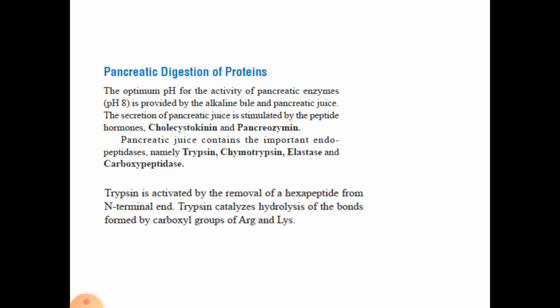In pancreatic digestion, the optimum pH for pancreatic enzymes is around 8, provided by alkaline bile and pancreatic juice. Secretion of pancreatic juice is stimulated by the peptide hormones cholecystokinin and pancreozymin. Pancreatic juice contains important endopeptidases like trypsin, chymotrypsin, elastase, and carboxypeptidases. Trypsin is activated by removal of a hexapeptide from the terminal end, and trypsin catalyzes hydrolysis of bonds formed by the carboxy group of arginine and lysine.